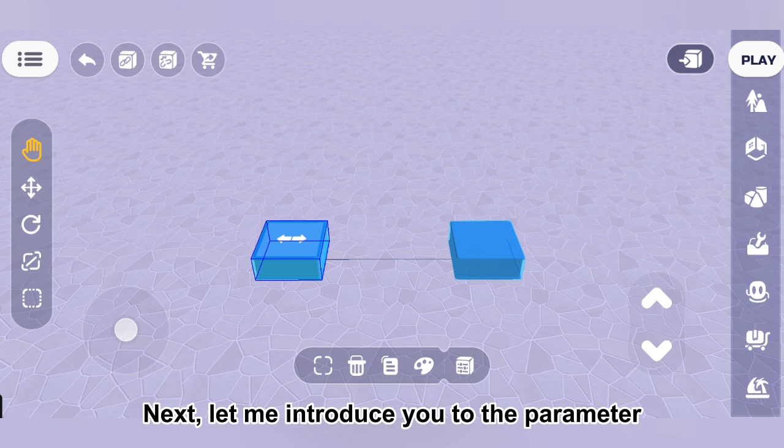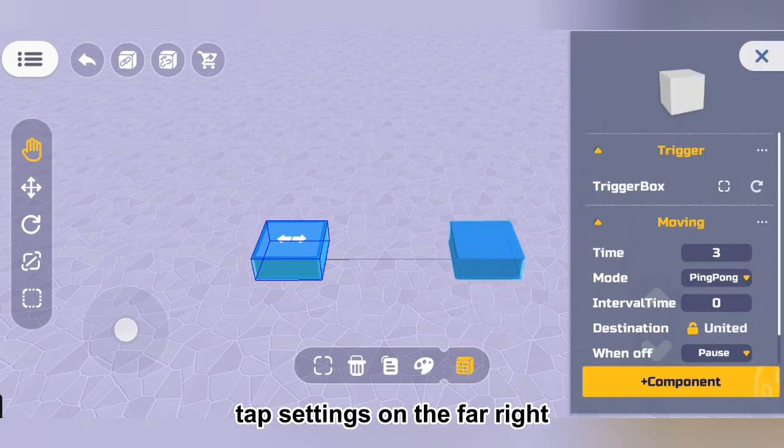Next, let me introduce you to the parameter settings of the moving component. After selecting the object, tap settings on the far right below to open the parameter setting panel.